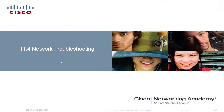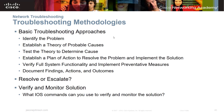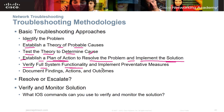Now let's look at 11.4, network troubleshooting. The basic troubleshooting approach is: identify the problem, establish a theory of probable cause, test the theory to determine the cause, establish a plan of action to resolve the problem and implement a solution, verify full system functionality, implement preventative measures, and document your findings, actions, and outcomes.